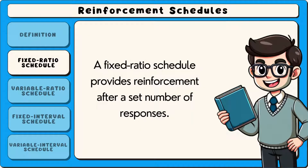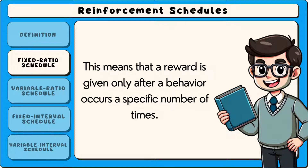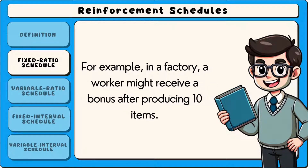A fixed ratio schedule provides reinforcement after a set number of responses. This means that a reward is given only after a behaviour occurs a specific number of times. For example, in a factory, a worker might receive a bonus after producing 10 items.